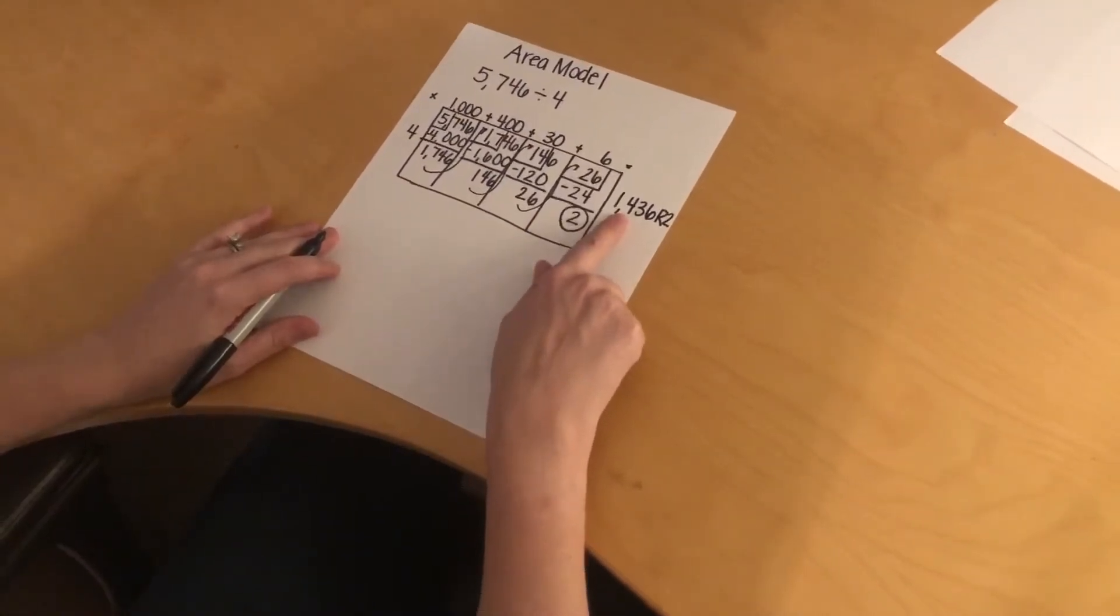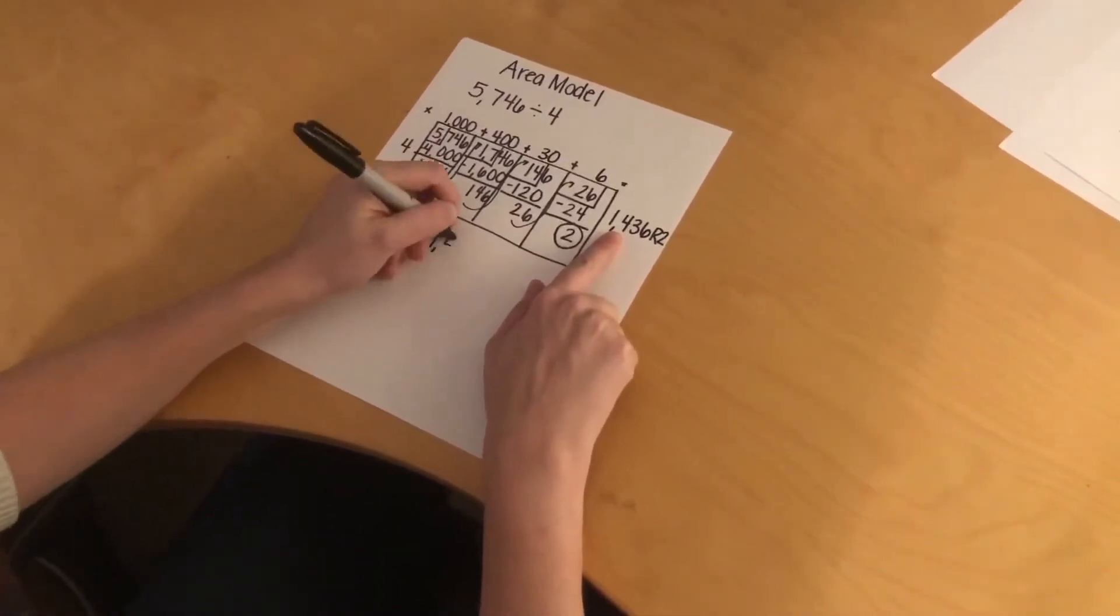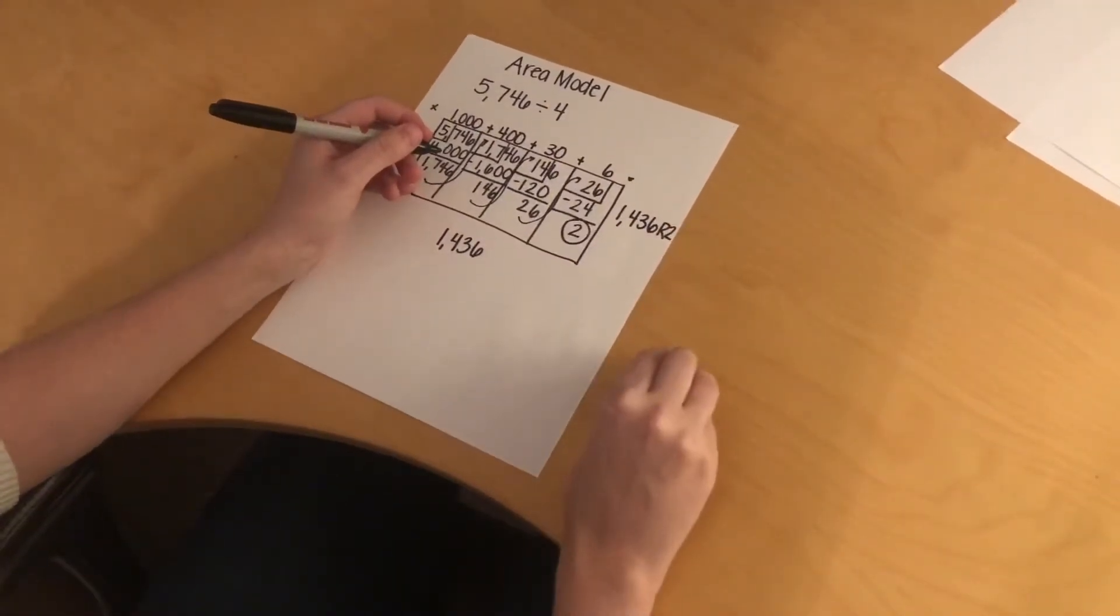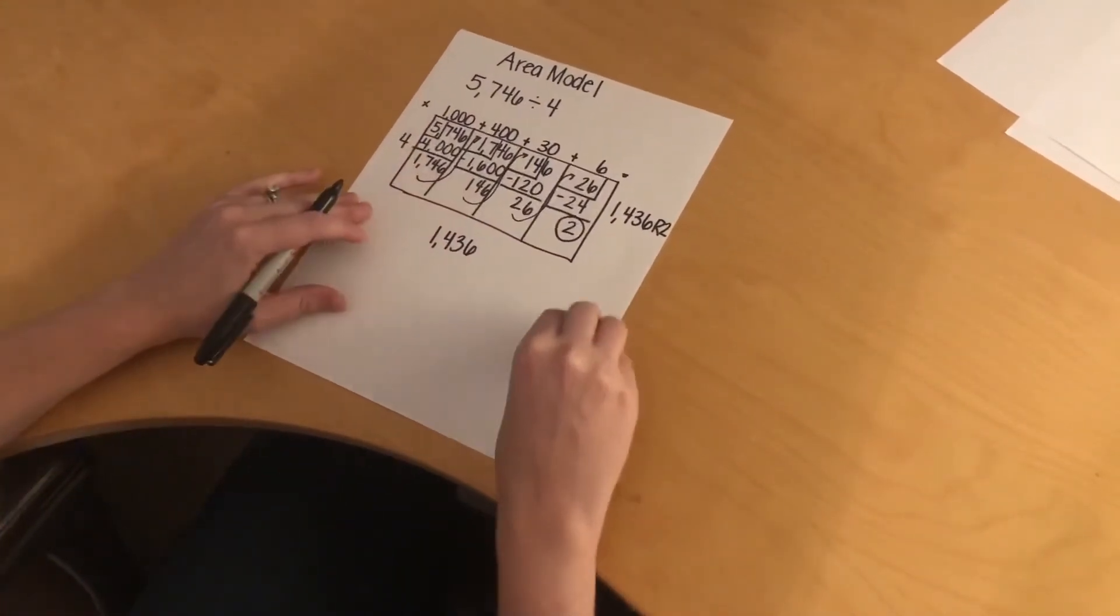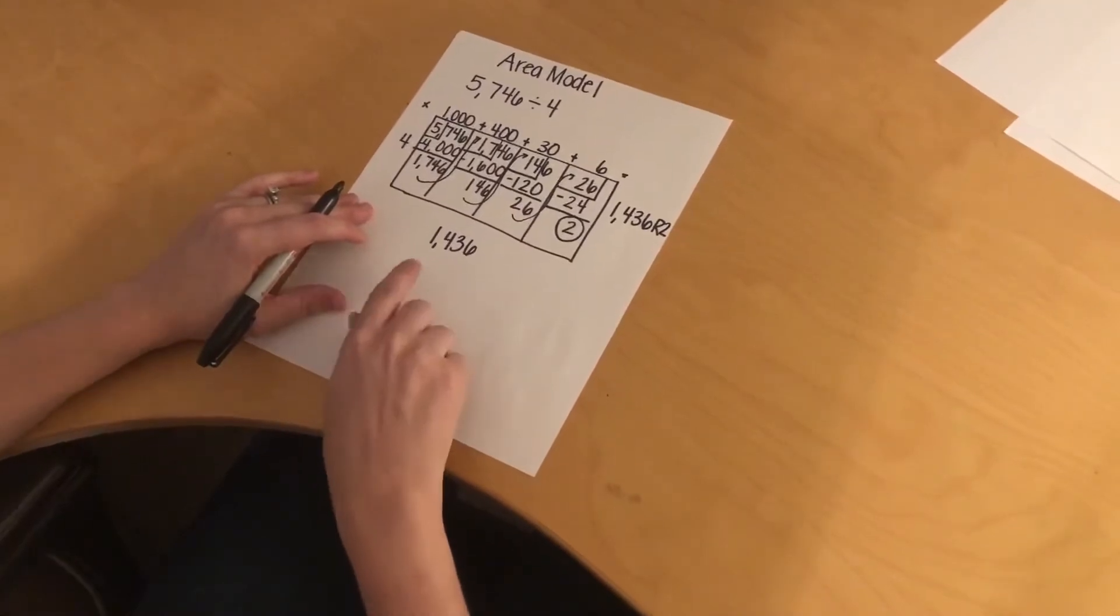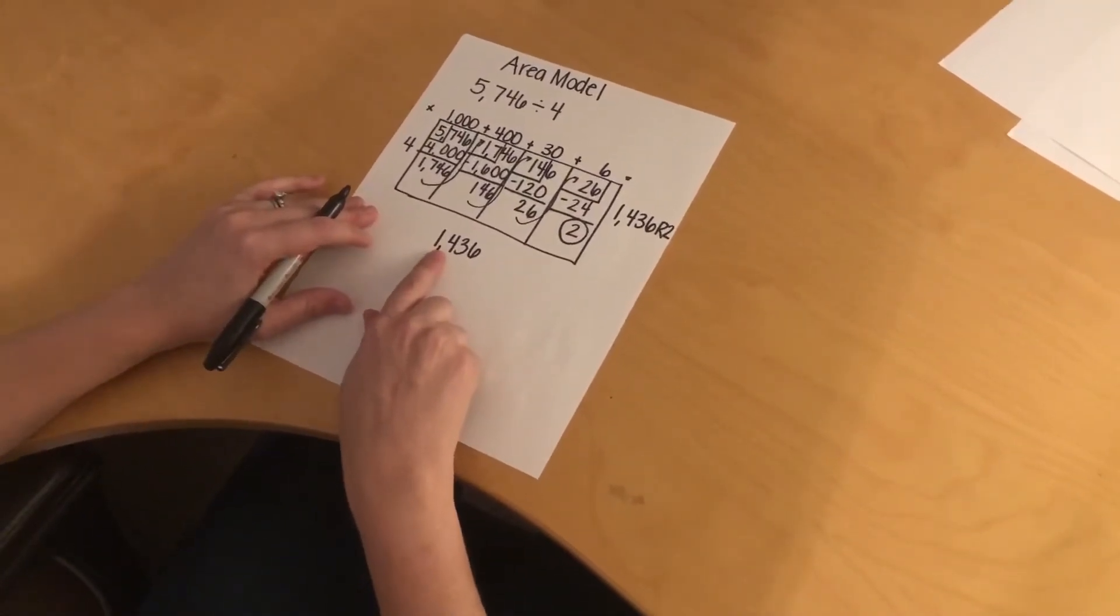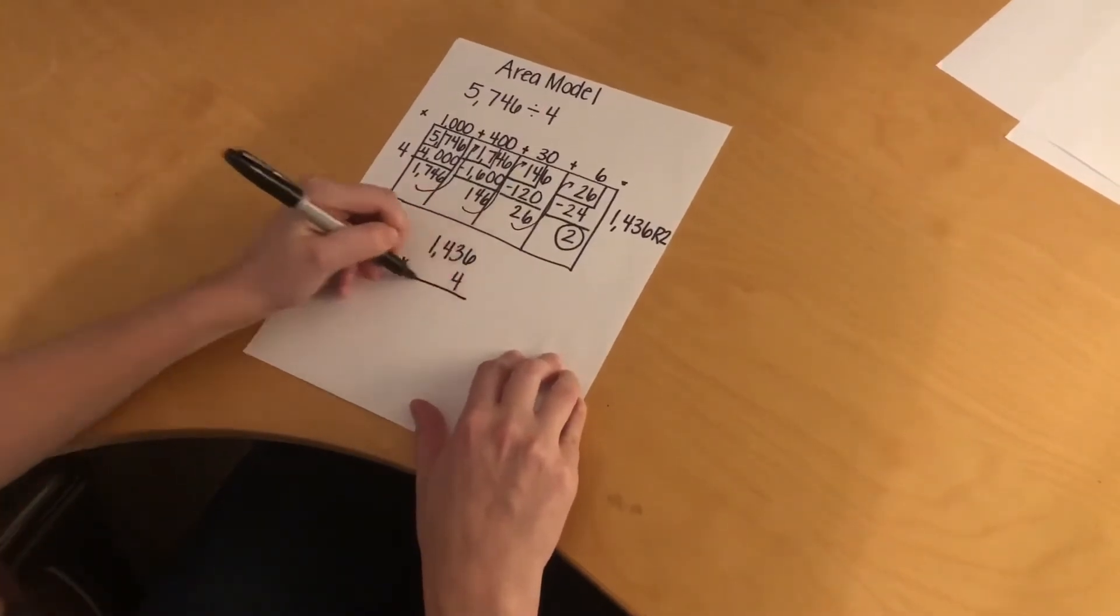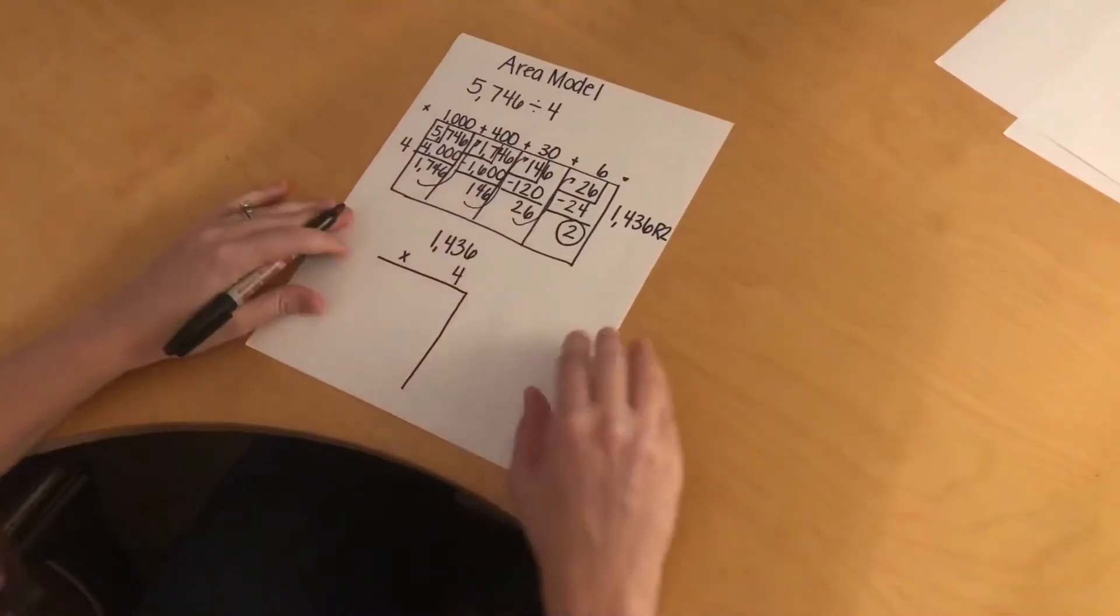I'm going to take this number right here, 1,436. I'm going to ignore the remainder for just a second, and since the opposite of division is multiplication, I'm going to multiply my quotient by my divisor, which is 4. And if I do that, I'm going to use partial products.